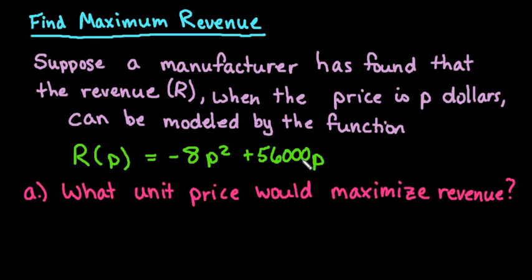So this is just an application of finding the vertex of the quadratic function. So we would just use the equation negative B over 2A comma F of negative B divided by 2A.